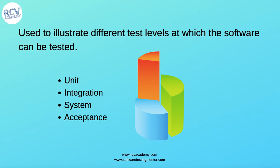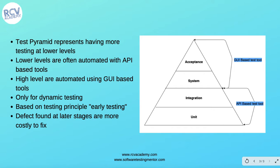The test pyramid illustrates the levels at which you can do software testing. It says that you should be testing from the base of the pyramid to the top, and it is based on the principle of early testing. In this diagram you have the pyramid with a unit testing level, then integration, system, and acceptance.